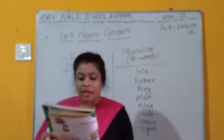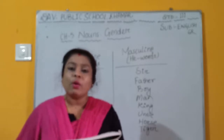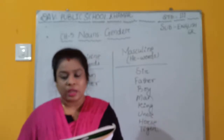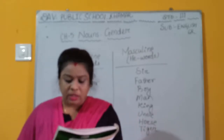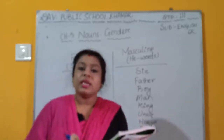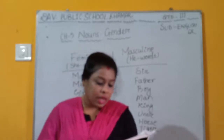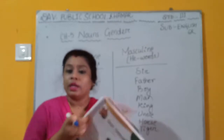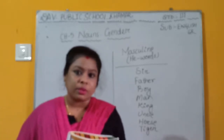Now complete the sentences given below by filling in the opposite gender of the highlighted nouns. For example: masculine gender and feminine gender. Example — She is my sister. I am her blank. Sister is feminine gender, so the answer is brother, which is masculine gender. The sentence will be: She is my sister. I am her brother. Similarly, you need to find out the word given and determine whether it is masculine or feminine gender. If you have any doubt, please contact me. Thank you.